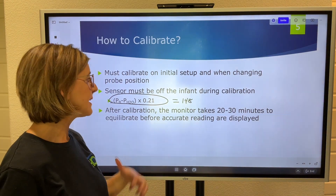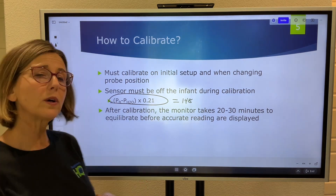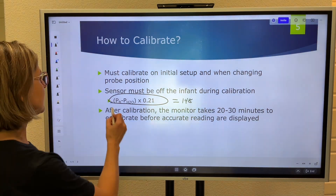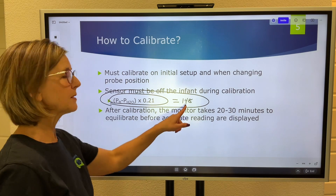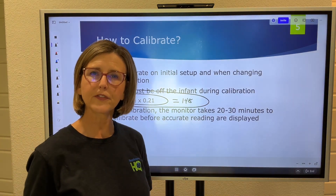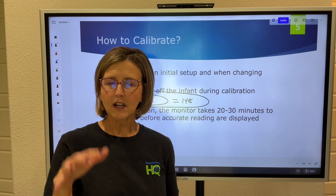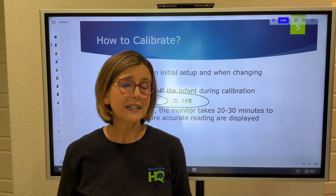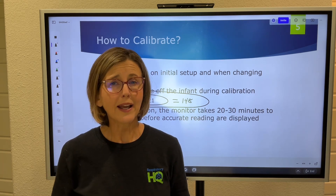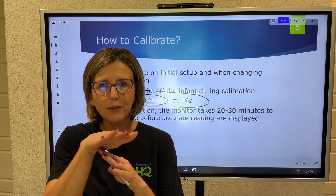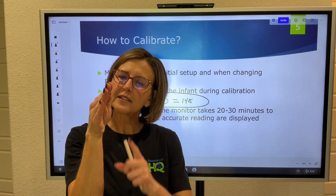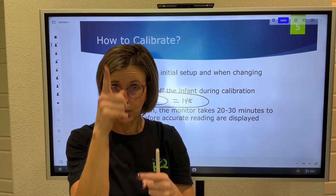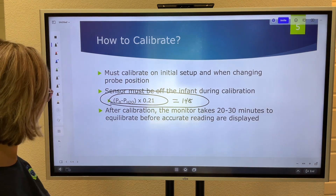When you put it back on the baby, it takes 20 to 30 minutes to equilibrate before it's reading accurately — give it time to work. An important clinical tip: if your transcutaneous oxygen monitor reads close to 150 but your pulse ox is reading 90, there's a discrepancy. Often the probe has come loose from the skin and is exposed to room air, reading atmospheric oxygen pressure. Pay attention to that — it's the kind of thing they like to ask on exams.